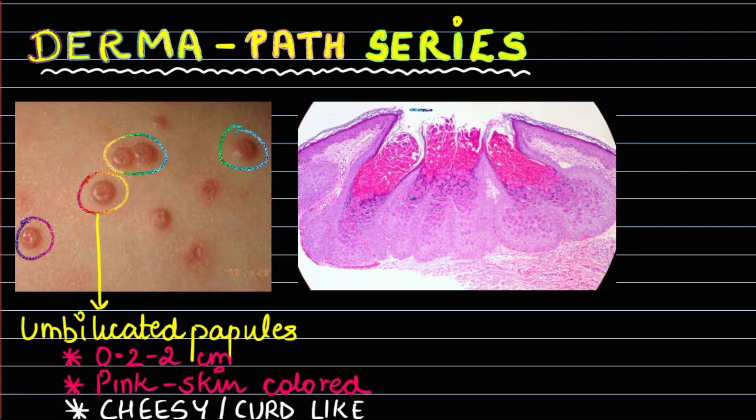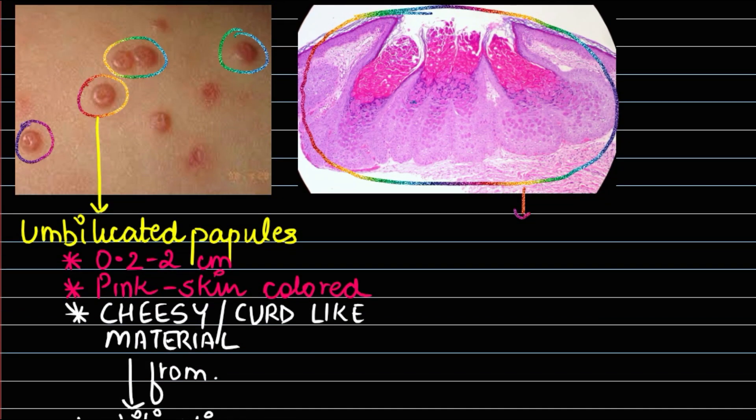In histopathology, you can appreciate a cup-shaped lesion. This is a very important keyword - the histopathology shows a cup-shaped lesion.